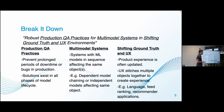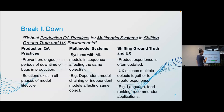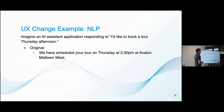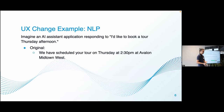The most important concept is shifting ground truth and UX. Today there are a lot of amazing products that revolve around the product experience — the user experience stitches multiple objects together. You'll see this in language feed ranking and recommendation applications. Imagine an AI assistant responding to 'I'd like to book a tour Thursday afternoon.' Your original ground truth test says: 'We have scheduled your tour on Thursday at 2:30 PM at Avalon the Town West.' That's an okay answer — but a week goes by and you get customer complaints: which Thursday is it?